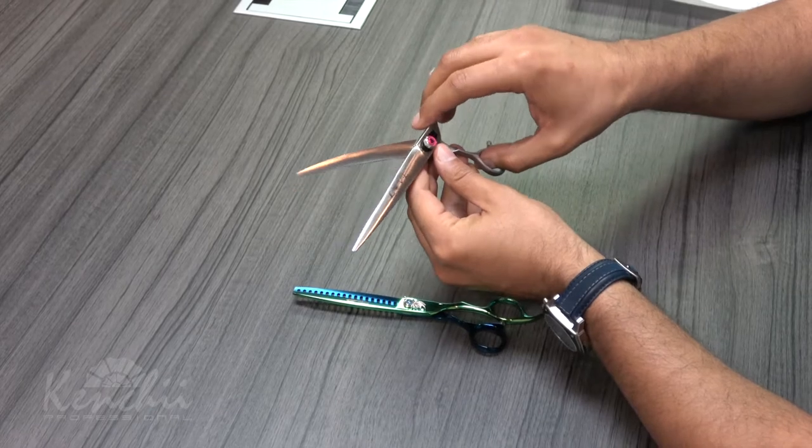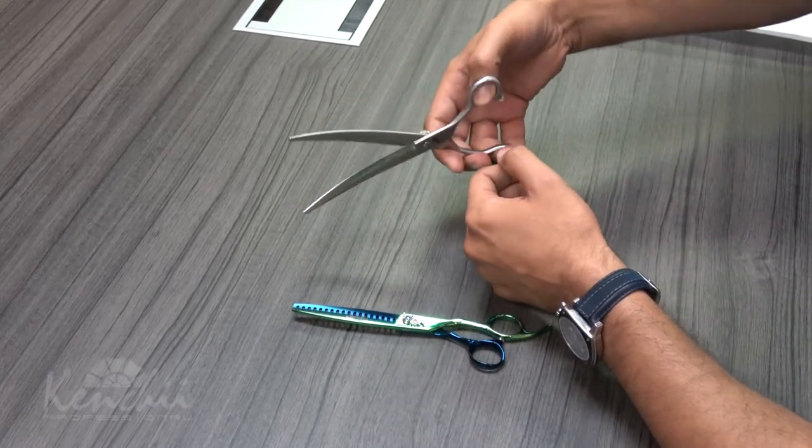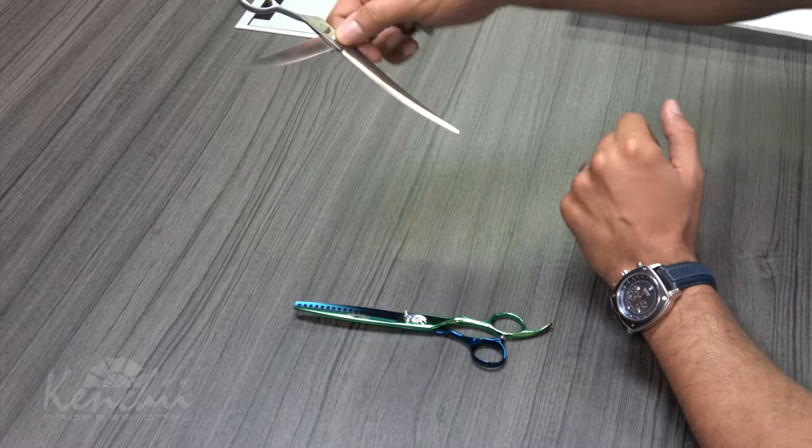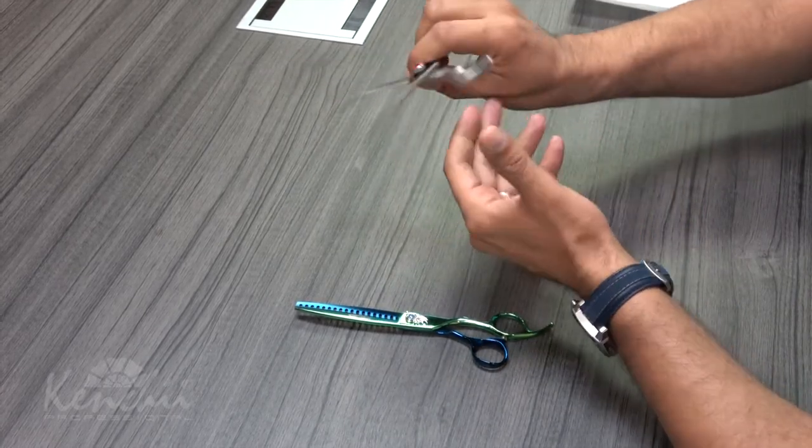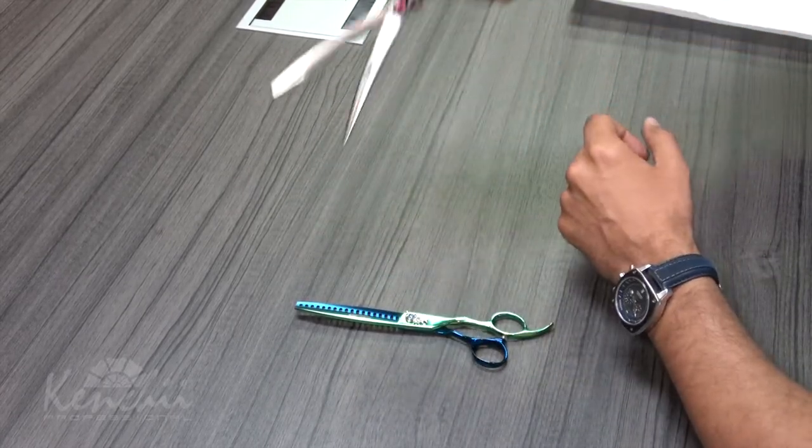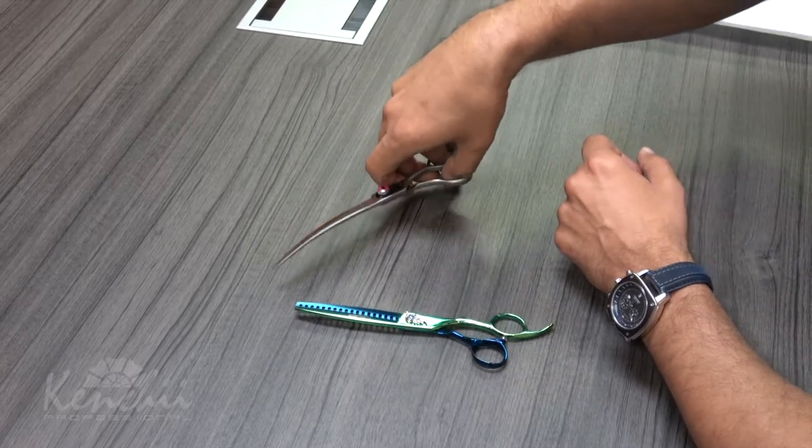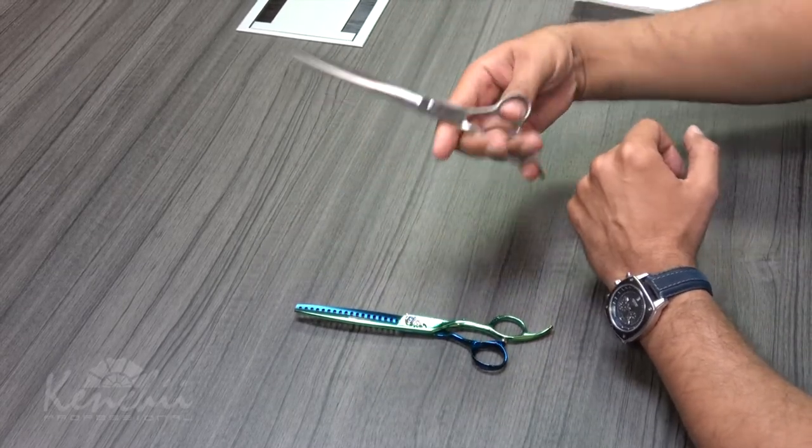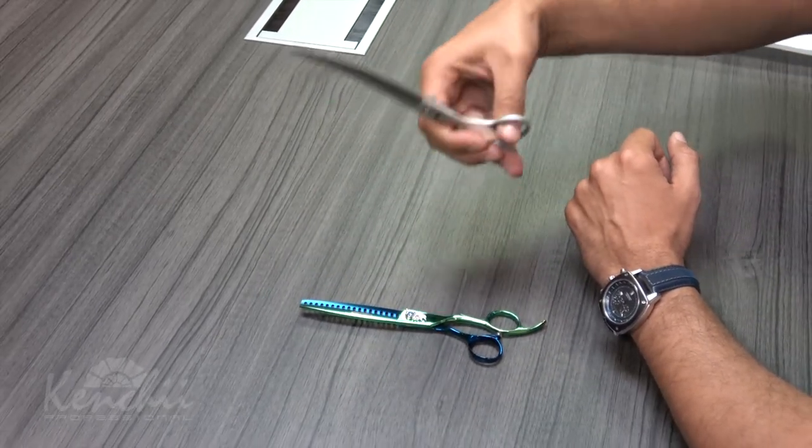So what happens if you drop your shears, based on how they land, obviously they could end up with a nick in the blade. So when we drop our shears, our first reaction is to make sure we pick it up and make sure they're okay. So we open and close right away.